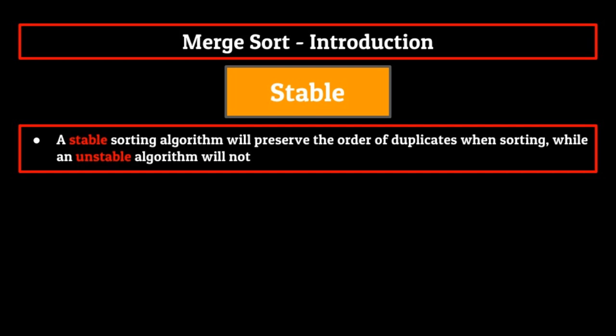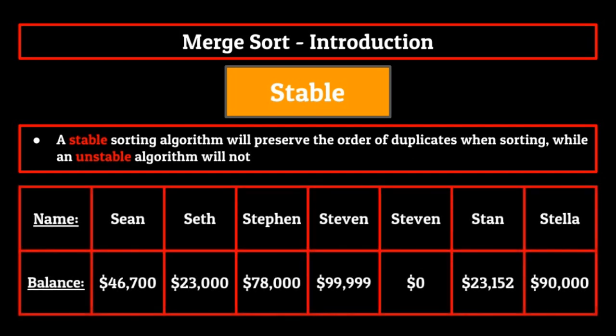For basic examples, this isn't too important. But as the complexity of the programs that you write increases, knowing which algorithms are stable and which are not can play a big part in which one you choose to implement on a database or program. For example, if you have a banking database wherein two users share the same name, and then you sort the database by names to perform a binary search on it, it's going to be extremely important that the people with the same names have their positions preserved. If not, this could end up compromising the entirety of the database, with people switching account details without you even noticing.